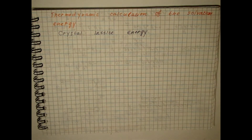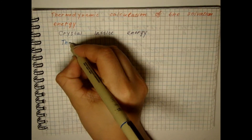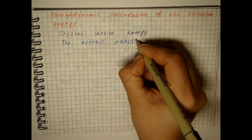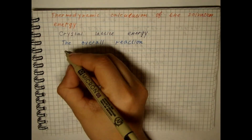Lattice enthalpies cannot be directly determined via experiment. However, they can be calculated from experimentally determined enthalpies using Hess's law. Consider the crystal lattice of sodium chloride. The formation of this lattice can be represented as a process consisting of five stages, and the final reaction will be as follows.